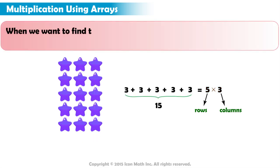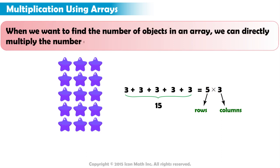So, when we want to find the number of objects in an array, we can directly multiply the number of rows by the number of columns.